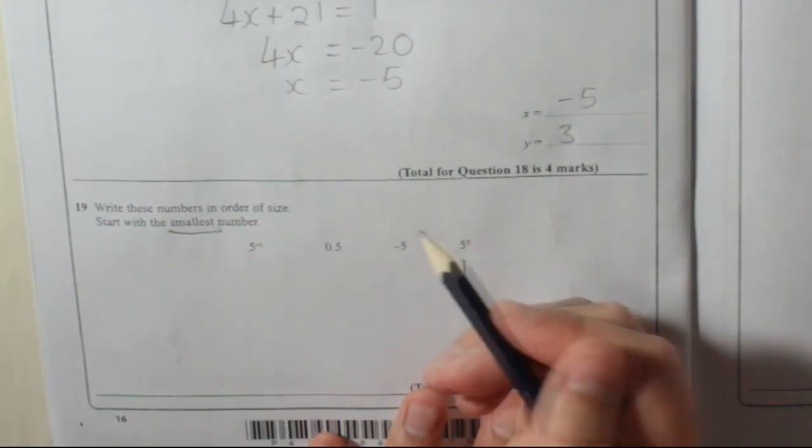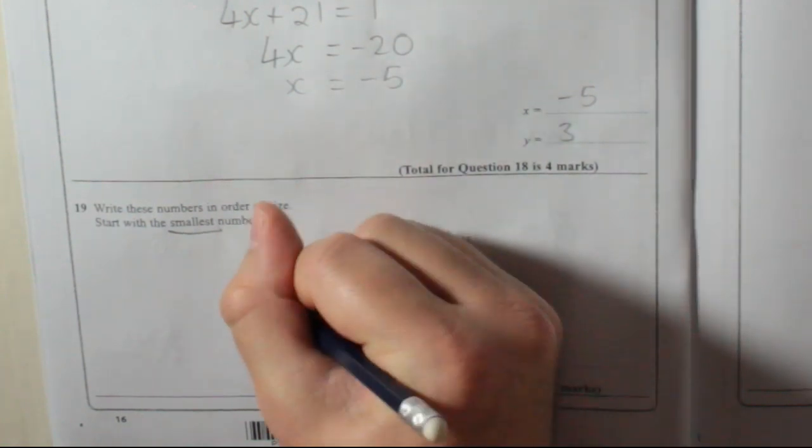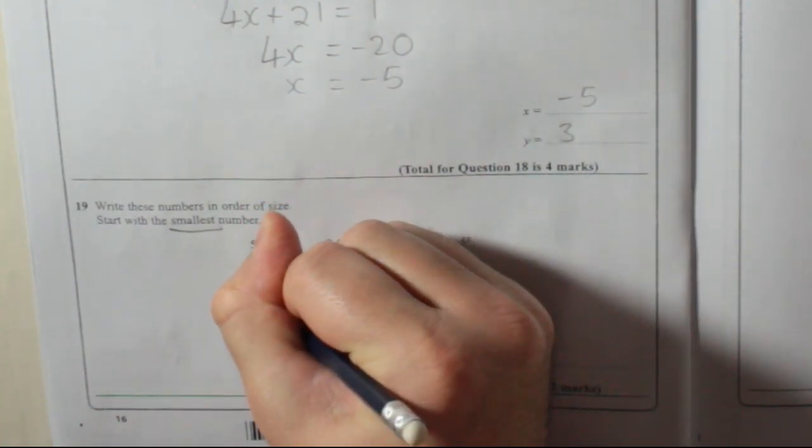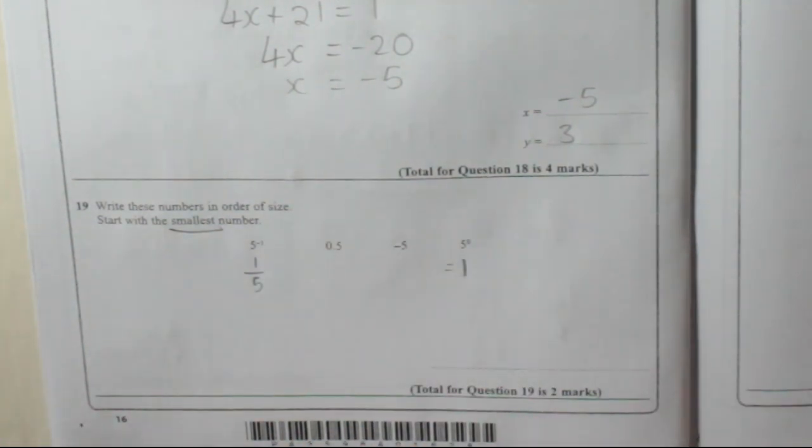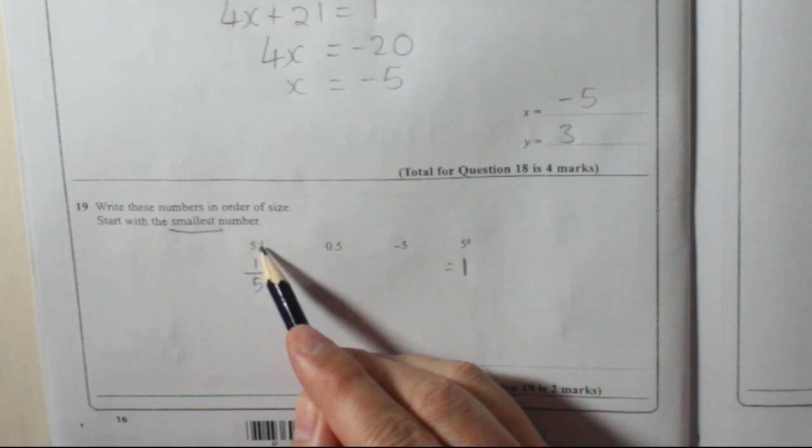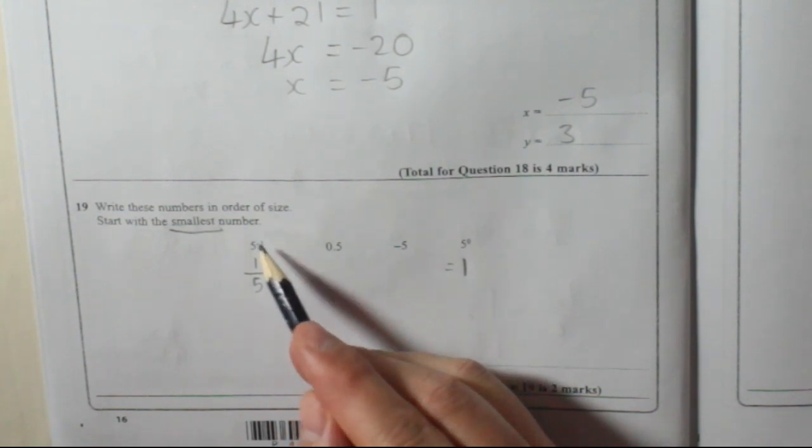5 to the power of minus 1 is the same as 1 over 5. It's the power of 1, but anything to the power of 1 is just itself. OK, so 5 to the power of minus 1 is 1 over 5.